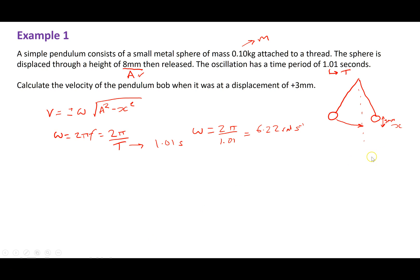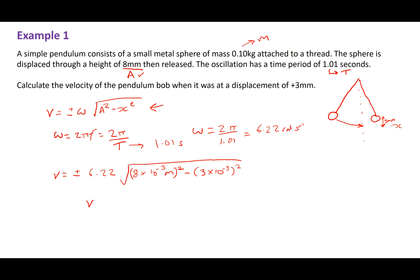Taking that value for omega and substituting it into the equation, my velocity is going to be equal to plus or minus 6.22 times the square root of 8 times 10 to the minus 3 metres squared — because it was an 8 millimetre amplitude — minus 3 times 10 to the minus 3 metres squared, all square rooted. When I type those numbers into my calculator, I get that my velocity at a displacement of 3 millimetres is going to be 0.046 metres per second. And that's how you work out the velocity of an oscillating object at any displacement in its oscillation.